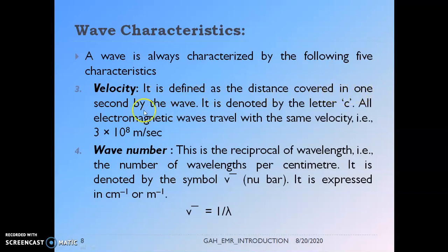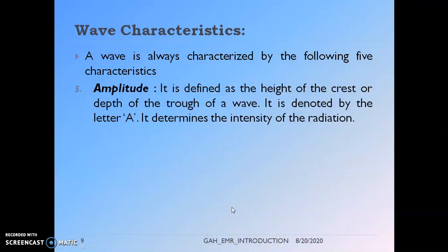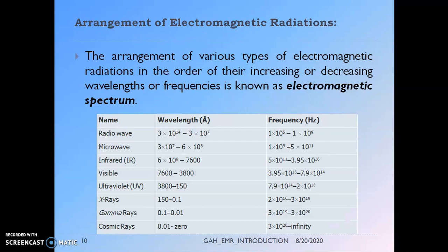Wave number (ν̄) = 1/λ, as it is the reciprocal of wavelength. Amplitude is defined as the height of the crest or the depth of the trough of a wave, denoted by the letter a, and it determines the intensity of the radiation. The electromagnetic spectrum covers an immense range of wavelengths. The arrangement of various types of electromagnetic radiation in order of increasing or decreasing wavelengths or frequencies is known as the electromagnetic spectrum.